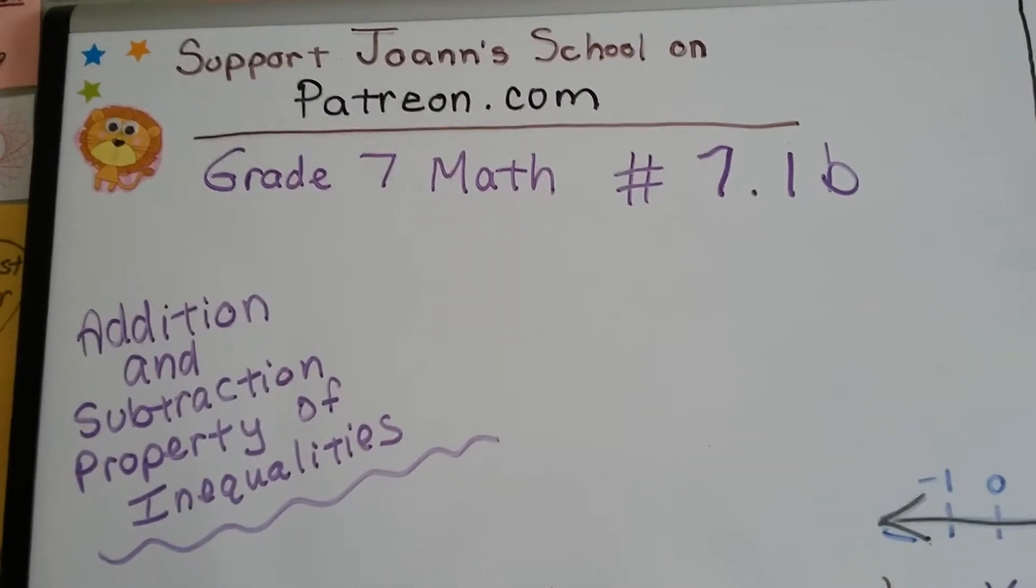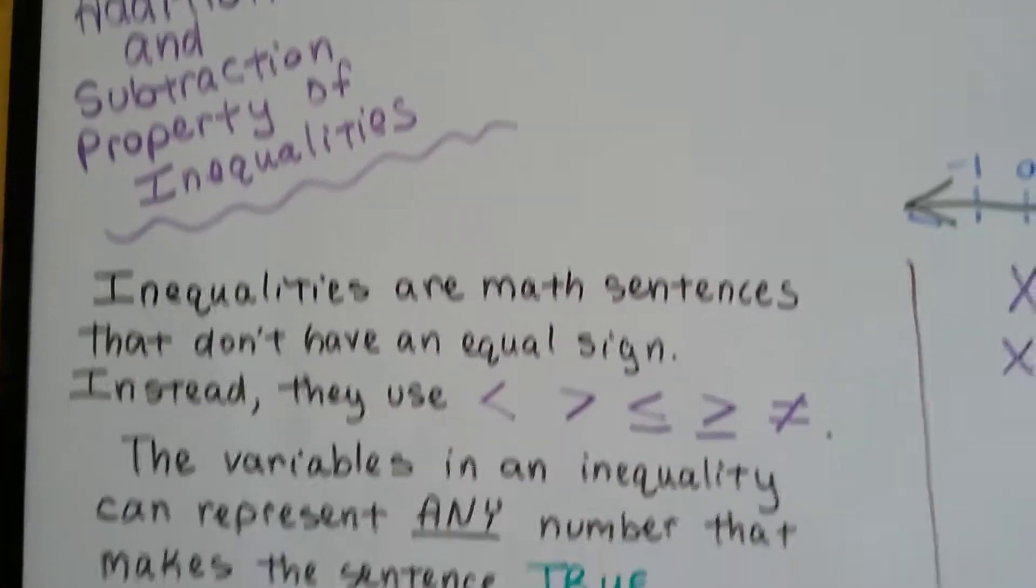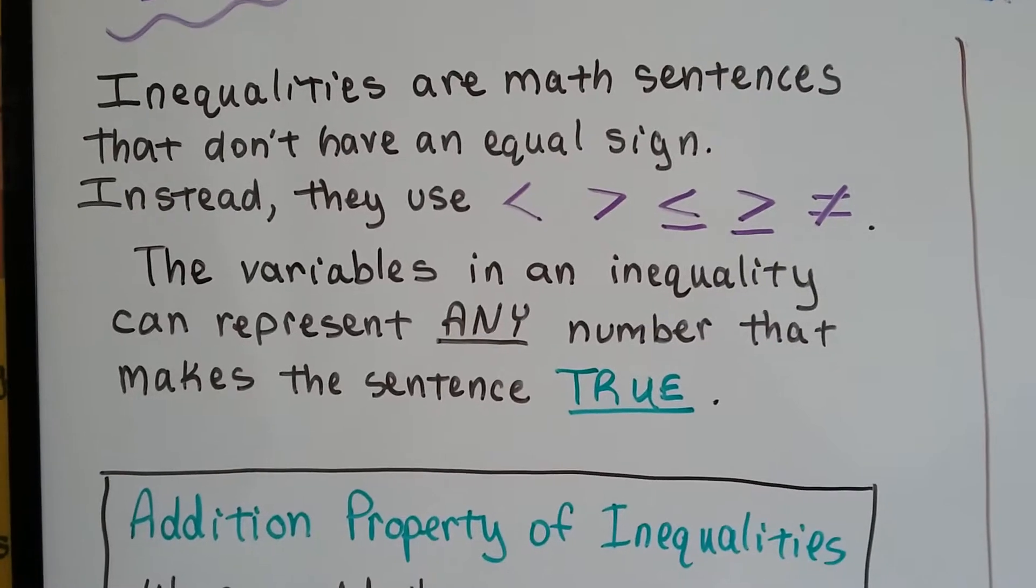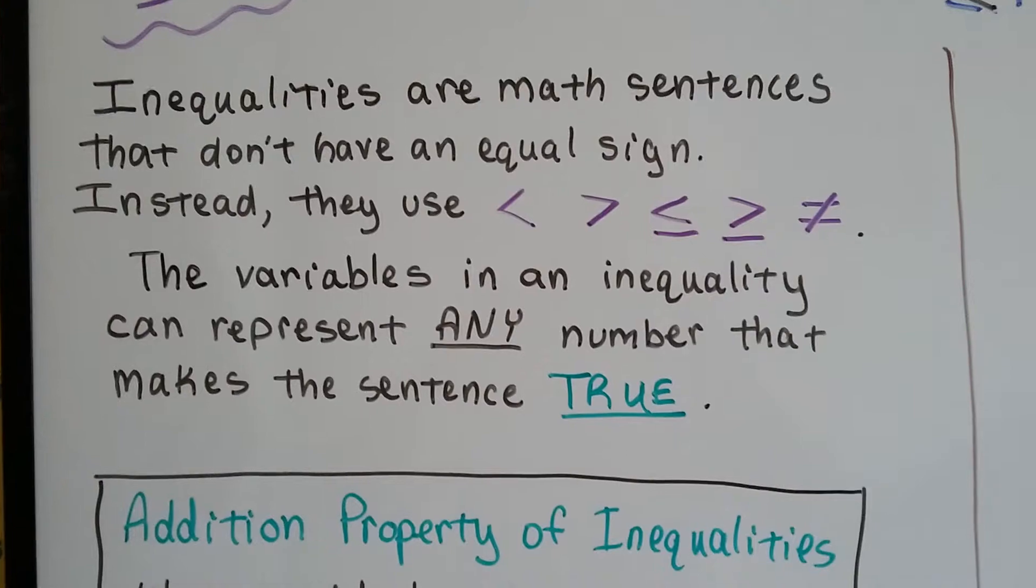Grade 7 math number 7.1b, Addition and Subtraction Property of Inequalities. Inequalities are math sentences that don't have an equal sign. Instead, they use less than, greater than, less than or equal to, greater than or equal to, or not equal to signs.